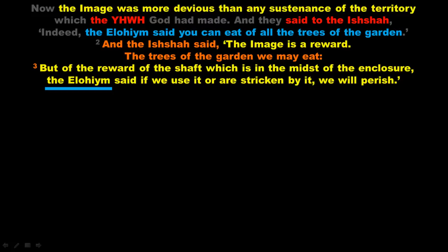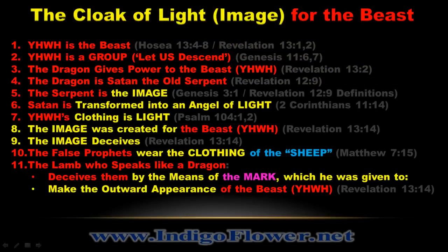This is clarified in Revelation 12 and 13, where we find basic facts about the image. First, we are told explicitly that YHWH is the beast with 7 heads and 10 horns. Second, YHWH is a group. Third, the Dragon gives the power to the beast YHWH. Fourth, the Dragon is the serpent. So the serpent is giving power to the YHWH. We know the word 'serpent' in Revelation stems from a word meaning 'to appear,' and the word for 'serpent' in Genesis 3 literally means 'image.' So the texts tell us the IMAGE is giving POWER to the BEAST YHWH — a clear relationship.